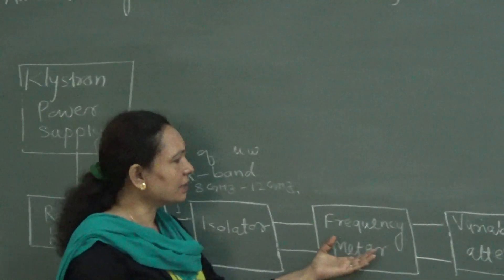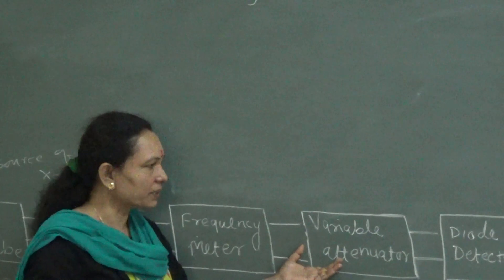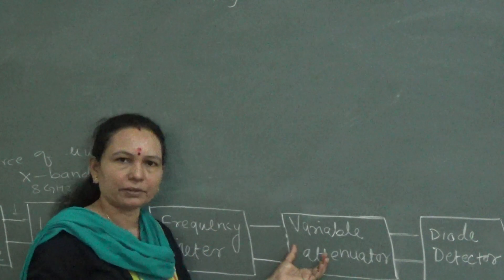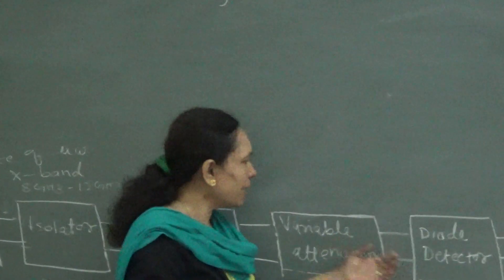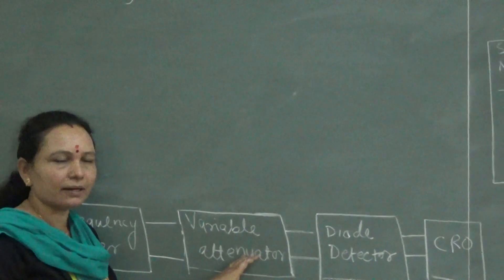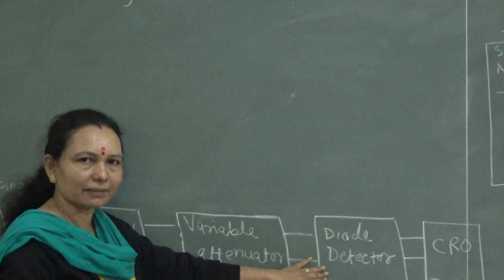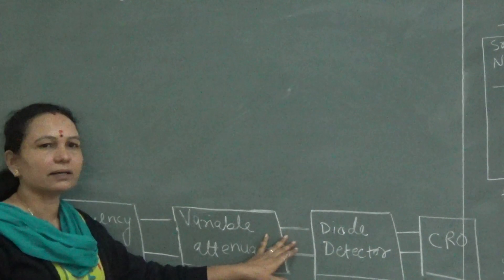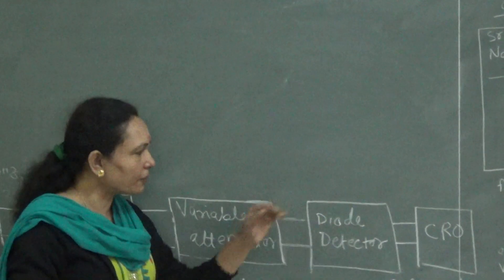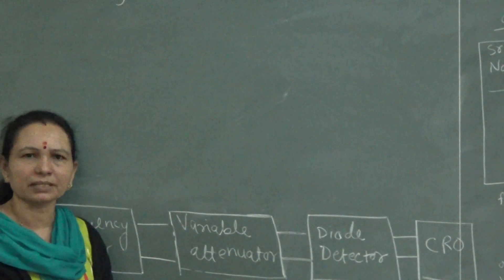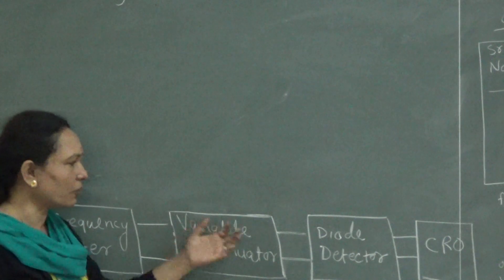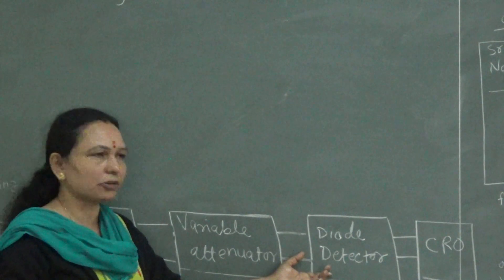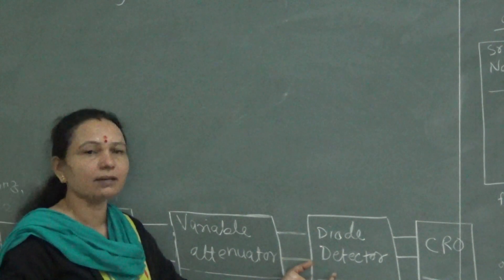After the frequency meter there is a variable attenuator, used to obtain a distortion-free output. By tuning it, you can change the magnitude of the output signal. Then there is a diode detector. Since the signal is a modulated signal, it is required for detection. We observe the output on the CRO, but the signal propagating is in the microwave frequency range, which the CRO cannot directly display. So we have to demodulate that signal using the diode detector. These different types of diode detectors will be discussed in the sixth unit.